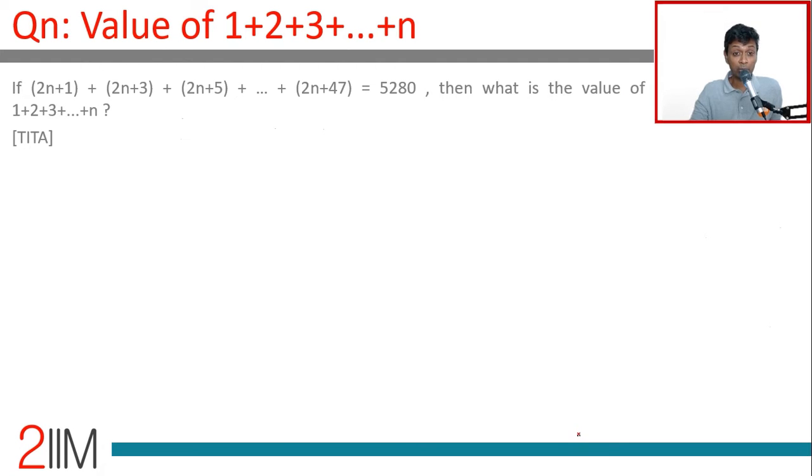If (2n+1) + (2n+3) + (2n+5) + ... + (2n+47) = 5280, then what is the value of 1+2+3+...+n? To isolate this, we separate: 2n + 2n + 2n, going from 1 to 47 but counting only odd numbers.